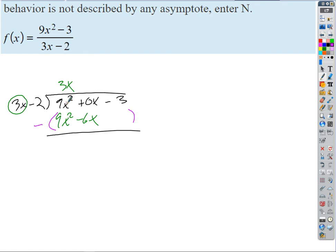So those cancel, of course. 0 minus negative 6x is 6x. Negative 3 minus 0, that just comes straight down, right? Okay, and then we're on to the next term in our answer.